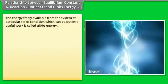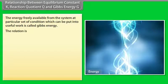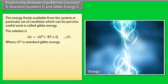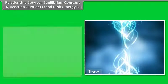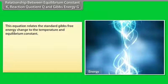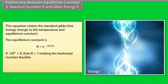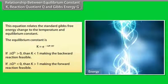Relationship between Equilibrium Constant K, Reaction Quotient Q, and Gibbs Energy G. The energy freely available from the system at a particular set of conditions that can be put into useful work is called Gibbs energy. At equilibrium, Q = K and ΔG = 0, giving the relation: ΔG° = −RT ln K. This equation relates the standard Gibbs free energy change to temperature and the equilibrium constant. If ΔG° > 0, then K < 1, making the backward reaction feasible. If ΔG° < 0, then K > 1, making the forward reaction feasible.